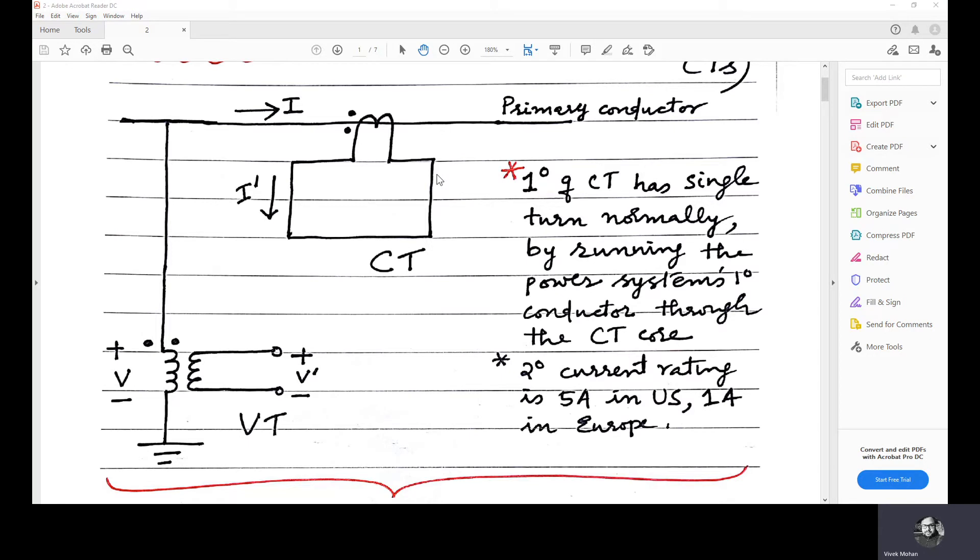Then, as I already told you, primary winding carries the current which is to be measured in a CT. And the primary winding of a VT carries the voltage which is to be measured. The secondary winding is connected to the current winding of the instrument, that means in a CT.